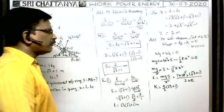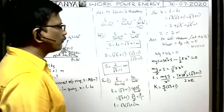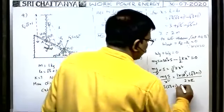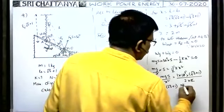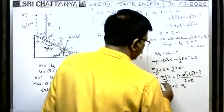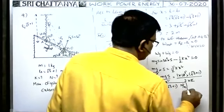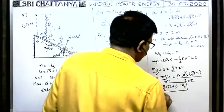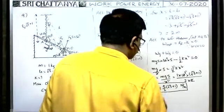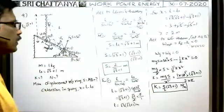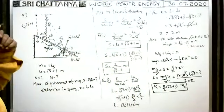What is the SI unit of the spring constant? Newton per meter. So, Newton per meter — it is the spring constant.